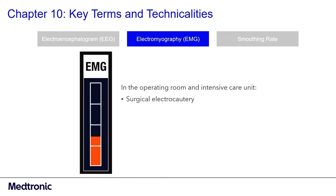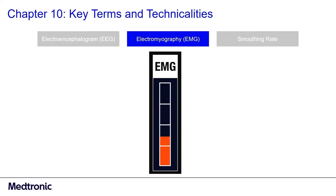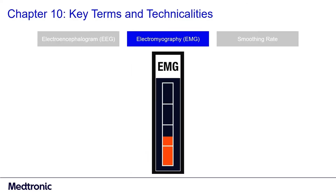Surgical electrocautery, ventilators, and electric warming blankets are examples of equipment and devices that can create high-frequency artifacts. When a high-frequency artifact is displayed, assess the source of the artifact and interpret the BIS monitoring value with caution.